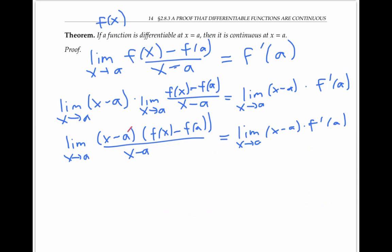And canceling these two copies of x minus a, which is fine to do when x is near a just not when x equals a, I get that the limit of f of x minus f of a is equal to this limit over here, what we said this limit was just zero. So my limit on the left is equal to zero.